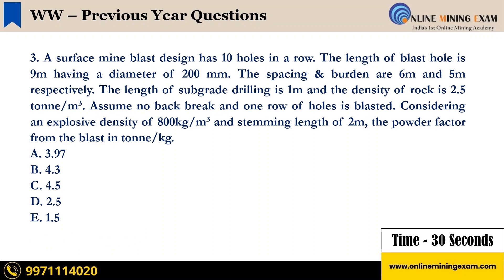A surface mine blast design has 10 holes in a row. The length of blast hole is 9 meter having a diameter of 200 millimeter. The spacing and burden are 6 meter and 5 meter respectively. The length of subgrade drilling is 1 meter and the density of rock is 2.5 ton per cubic meter. Assume no back break and one row of holes is blasted. Considering an explosive density of 800 kilogram per cubic meter and stemming length of 2 meter, the powder factor from the blast in ton per kg is?